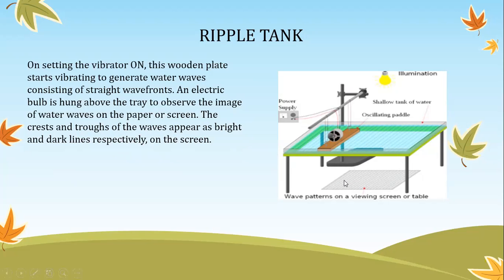If there are bright lines, then it will be a crest. If there are dark lines, then it will be a trough. So: bright = crest, dark = trough.